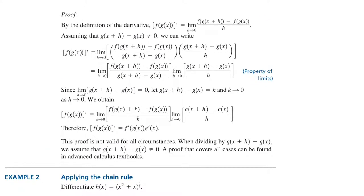To prove this, we know the derivative of F of G of x is the limit of F of G of x plus h minus F of G of x divided by h as h approaches 0. Assuming G of x plus h minus G of x is not 0, we multiply and divide the fraction by G of x plus h minus G of x. We split the limits. The first limit is the derivative of F at G of x and the second one is G prime of x, giving us the result: the derivative of F of G of x is F prime of G of x times G prime of x.